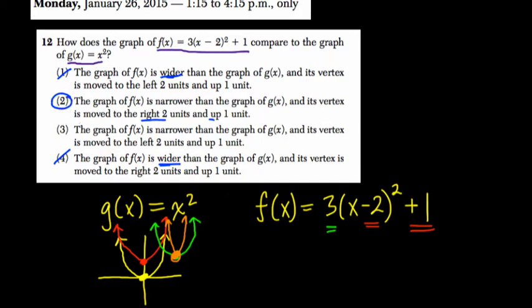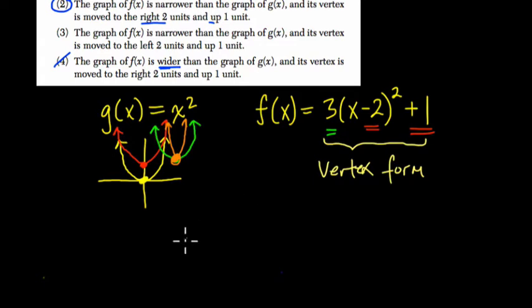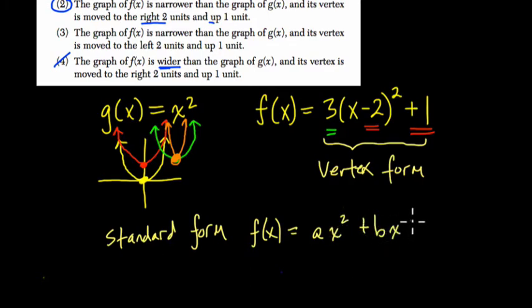Now let's just take a look at this because really, this function is in something called vertex form. Vertex form is one of the two most common forms we use in describing parabolas. Standard form is something like f of x equals a, a number, times x squared, plus b, a number times x, and then plus c, your constant. You can turn this vertex form into standard form by squaring x minus 2, so x minus 2 times x minus 2, then tripling it, and then adding 1, and you would rearrange and combine the terms, and you would get standard form.